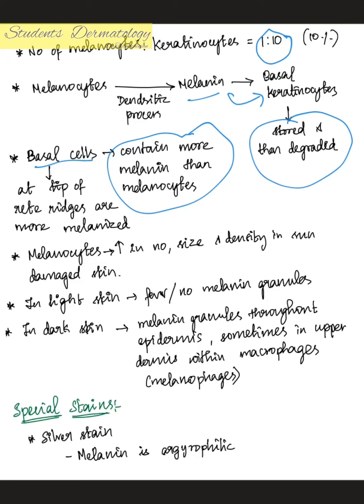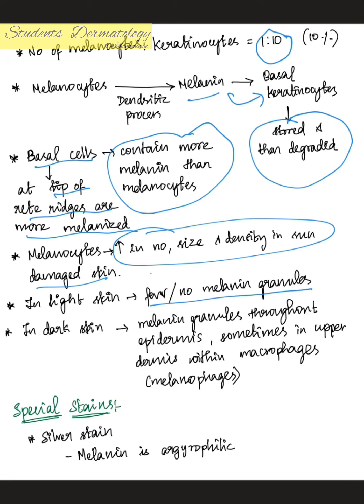The basal cells at the tip of the rete ridges are found to be more melanized. Melanocytes increase in number, size, and density in sun-damaged skin. In light skin there will be few or no melanin granules, whereas in dark skin melanin granules are found throughout the epidermis and sometimes in the upper epidermis within macrophages — these are called melanophages.